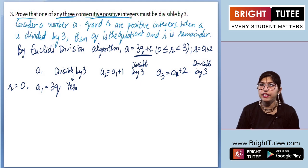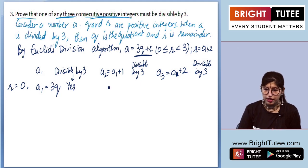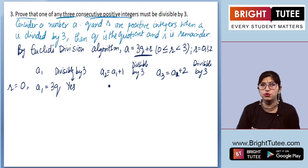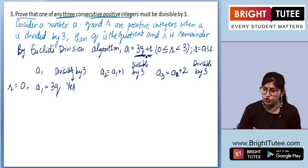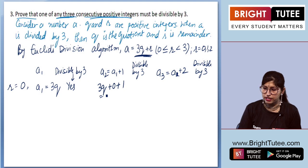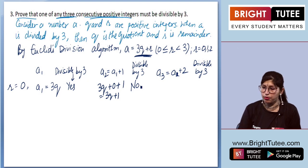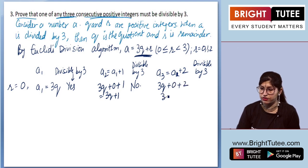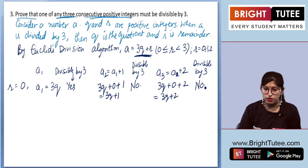When r equals 0, a2 equals a1 plus 1, which is 3q plus 0 plus 1, giving us 3q plus 1. Is it divisible by 3? No, it is not. And a3 equals 3q plus 0 plus 2, giving 3q plus 2. Is it divisible by 3? No. So when r is 0, only a1, the first number, is divisible by 3.